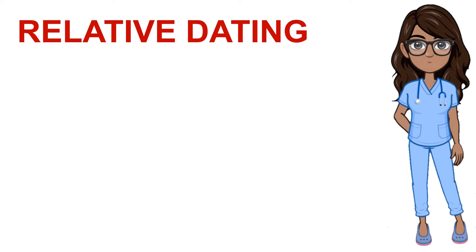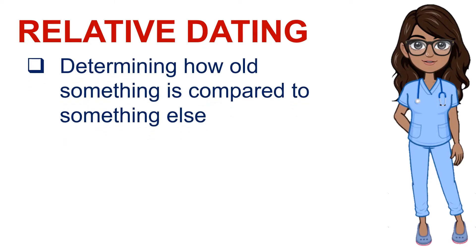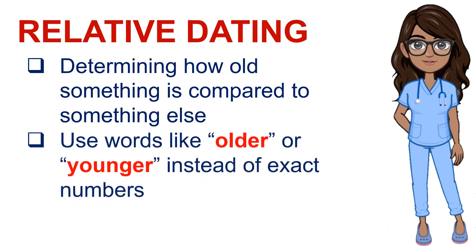Relative dating is when you give the age of a rock or fossil compared to another rock or fossil. It is determining how old something is compared to something else. It uses words like 'older' or 'younger' instead of exact numbers.